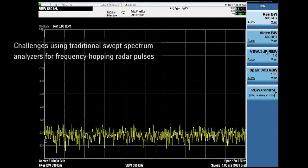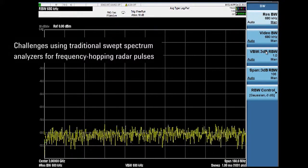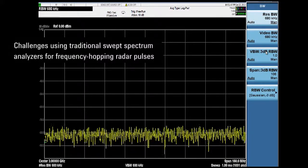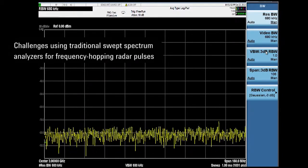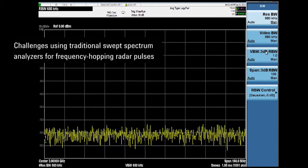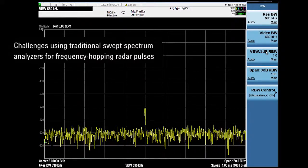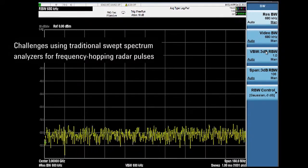Traditional swept spectrum analyzers only display signal power when the sweeping local oscillator is in band. If we wish to analyze a signal like frequency hopping radar pulses, we have to take many sweeps in the hopes the analyzer local oscillator is tuned to the frequency of the radar during the pulse on time.